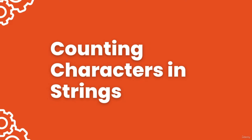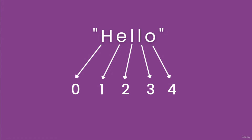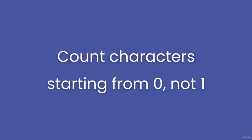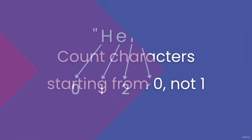Hey guys, I'm going to show you how the computer counts characters in a string. As you can see, I have the string 'hello'. Each letter in this string is a character. In this string, there are five characters — and that's true. But here's the thing: the computer counts the characters starting from zero, not from one. So h is the zeroth character, e is the first character, l is the second character, and so on. When you count characters in a string, always start the first one as zero, because that's how Python counts it.